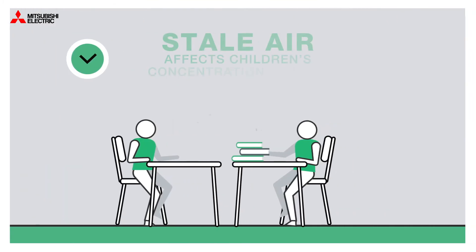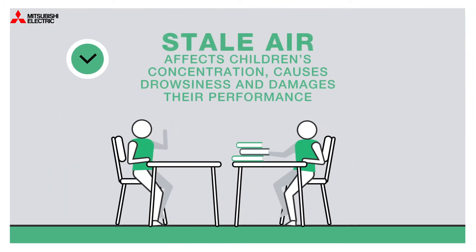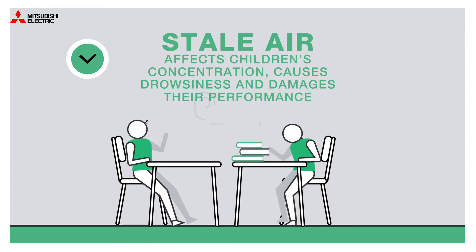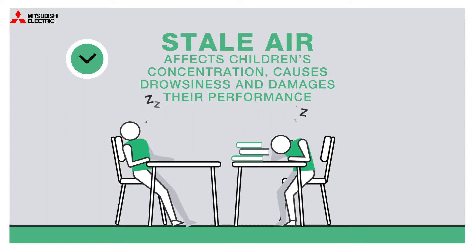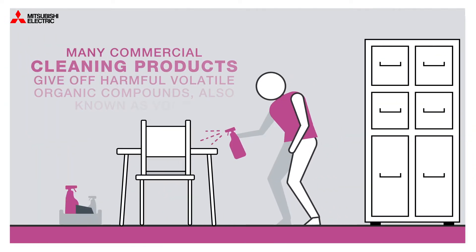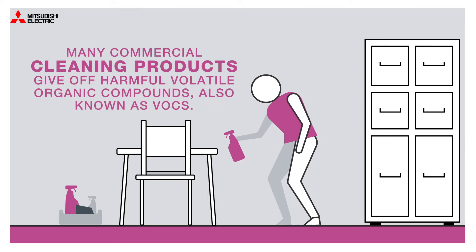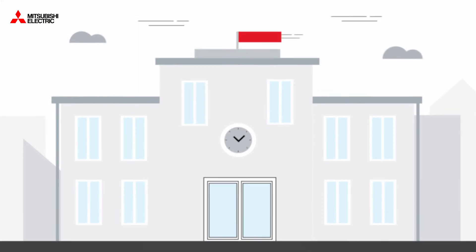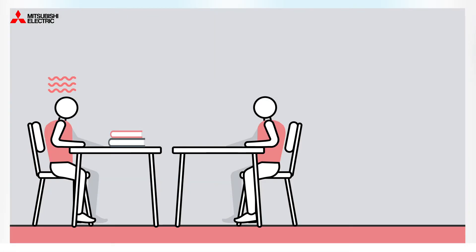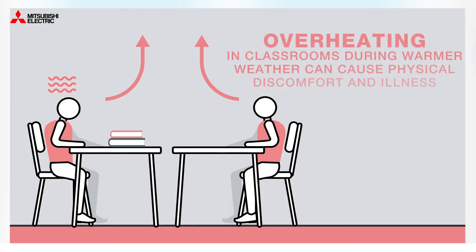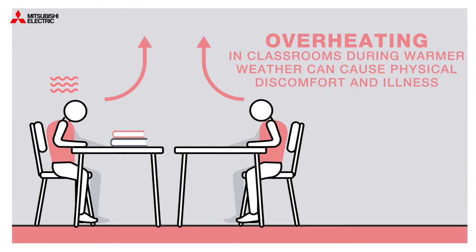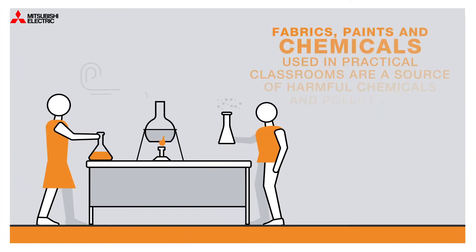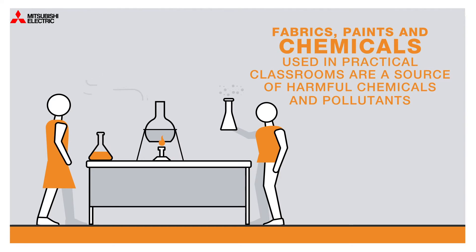Stale air affects children's concentration, causes drowsiness and damages their performance. Many commercial cleaning products give off harmful volatile organic compounds, also known as VOCs, that can be trapped inside. Overheating in classrooms during warmer weather can cause physical discomfort and illness. Fabrics, paints and chemicals used in practical classrooms are also a source of harmful chemicals and pollutants.